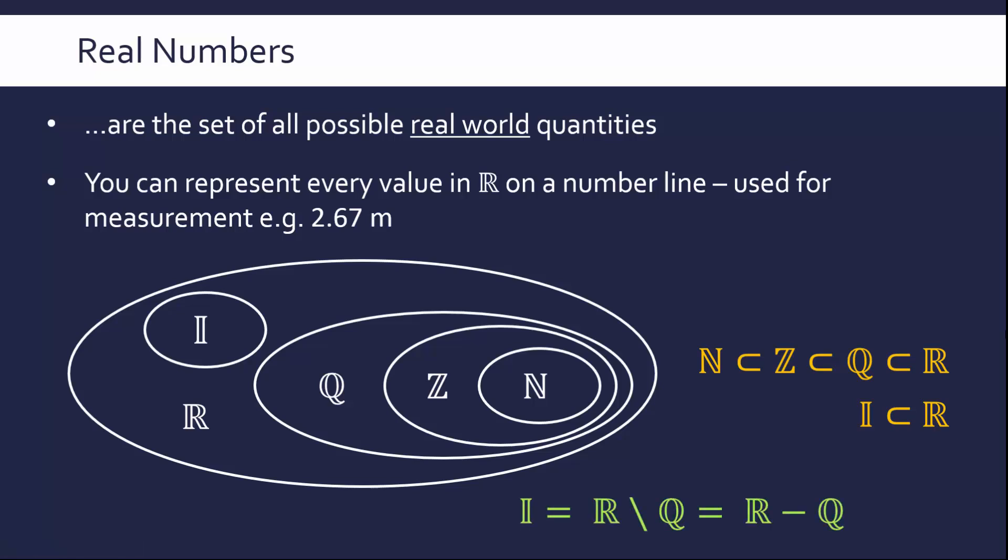Finally, to flex a bit more set notation, we can use set difference to now express irrational numbers and how they relate to real numbers. An irrational number are all of the numbers in real which are not in our rational set. I think the minus sign is a little bit better at showing the set difference. Again, our irrational numbers are all of our real numbers subtracting the ones which are rational.